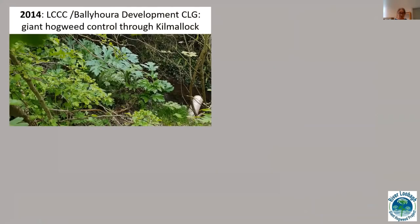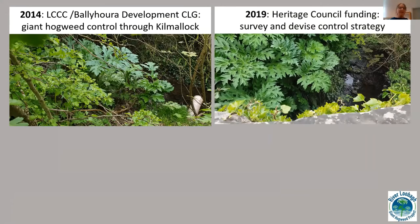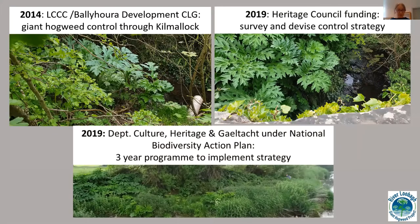By 2018, they recognised that unless the infestations upstream were controlled, Kilmallock could always be recolonised because the main form of dispersal for giant hogweed is by seed dispersing downstream. So in 2019, Limerick City and County Council got Heritage Council funding to develop a survey and devise a control strategy. Later that year, under Department of Culture, Heritage and Gaeltacht funding under the National Biodiversity Action Plan, a three-year programme was implemented to carry out that strategy.